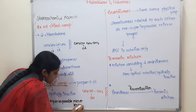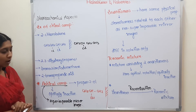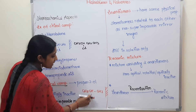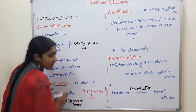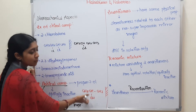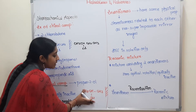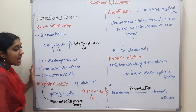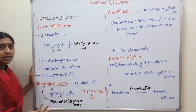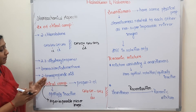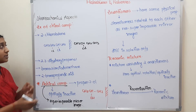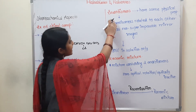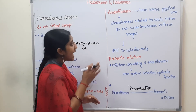A superimposable mirror image means both mirror images are a perfect fit — they coincide. That is a superimposable mirror image, and such a compound is achiral. A racemic mixture is also an important concept here — along with enantiomers.